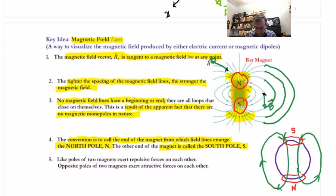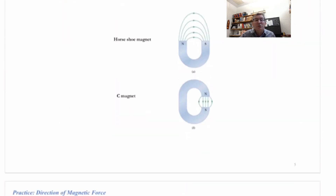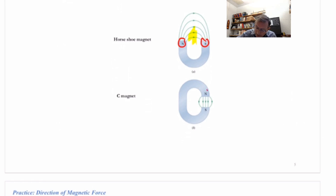Like poles of two magnets repel each other — two north poles or two south poles — and opposite poles attract. You get other shapes of magnets besides bar magnets: the horseshoe and the C magnet. Both have a north pole and south pole with field lines coming out of north and going into south. The field is quite strong and uniform in the space between the poles of a C magnet.